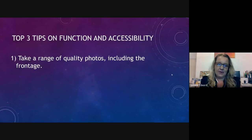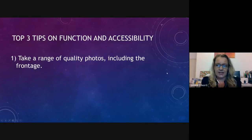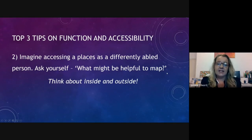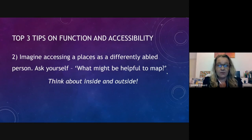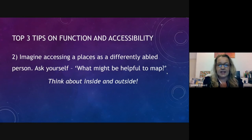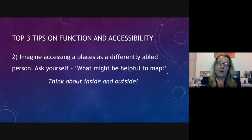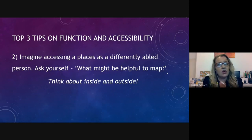My top three tips on function and accessibility: first, take a range of quality photos including the frontage if there's no 360 photo. Second, imagine accessing a place as a differently abled person. As able-bodied people, we have certain privileges we're probably not even aware of - the fact that we can see signs, hear noises, walk up and down stairs. If I imagine what it might be like accessing a place as a differently abled person, I can think about what might be helpful to map - what could I photograph that might help someone visiting with a wheelchair user, someone with mobility issues, or a child on the autism spectrum who doesn't like loud noises.